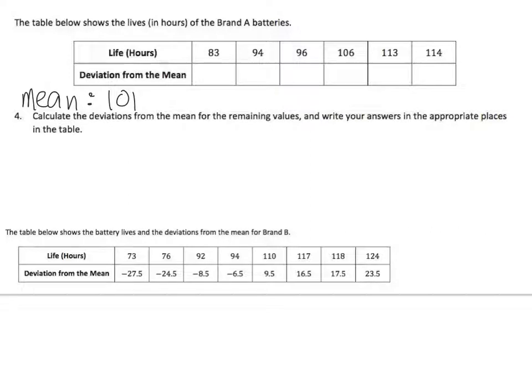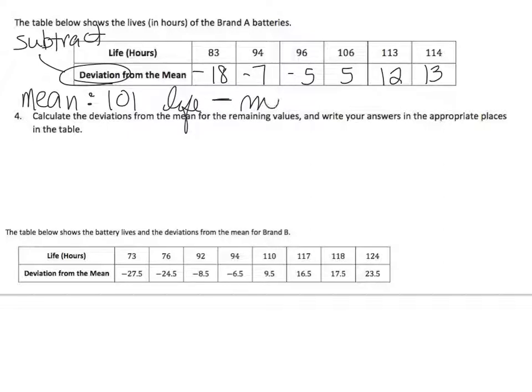So, I'm just going to grab my calculator and go 83 minus 101. 94 minus 101. 96 minus 101. 106 minus 101. 113 minus 101. And last but not least, 114 minus 101. That's the deviation. So, subtract from the mean. I took 101, I went life minus mean and filled in all of those blanks. Got it?